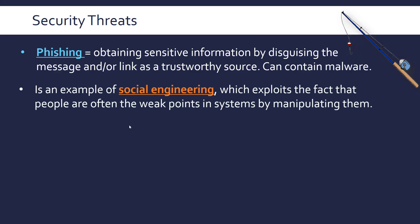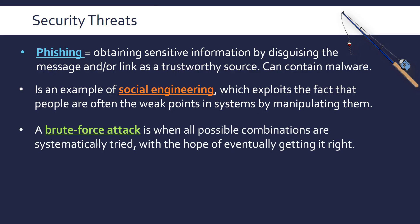Phishing is an example of social engineering. It's not done by a programmer — it's not code. It's an example of trying to manipulate someone through social engineering, which exploits the fact that people are often the weak points in systems. You manipulate people to gain access to data.